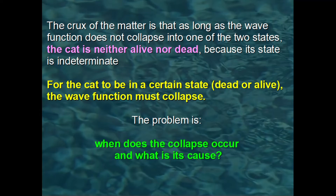For the cat to be in a determined state, dead or alive, the wave function must collapse. So the Schrödinger equation must stop working at some point for the wave function to collapse. But the problem is: when does the collapse occur? And what is the cause of the collapse? The problem of the cause of the collapse is crucial because the Schrödinger equation, which summarizes the laws of quantum physics, neither determines nor predicts any collapse. This means that the collapse of the wave function cannot be considered a consequence of the laws of quantum physics, and therefore represents a non-physical process, which some would call supernatural.